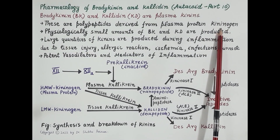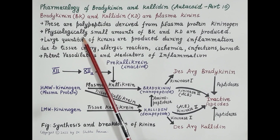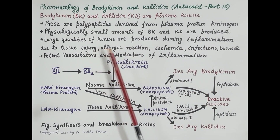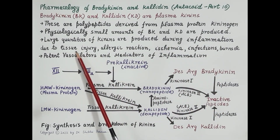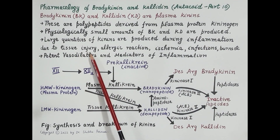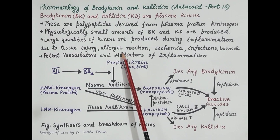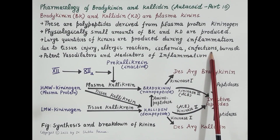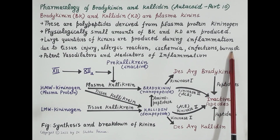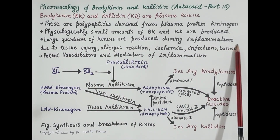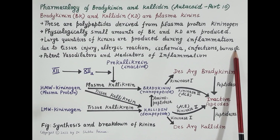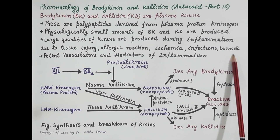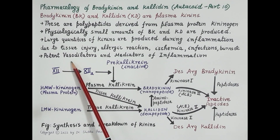Physiologically, only small amounts of kinins are produced, but large quantities are produced during inflammation. This inflammation can be due to tissue injury, allergic reaction, ischemia (reduced blood supply to a tissue), infection, or burns. In all these cases there is excessive production of kinins, and once produced they further enhance or accelerate the process of inflammation.